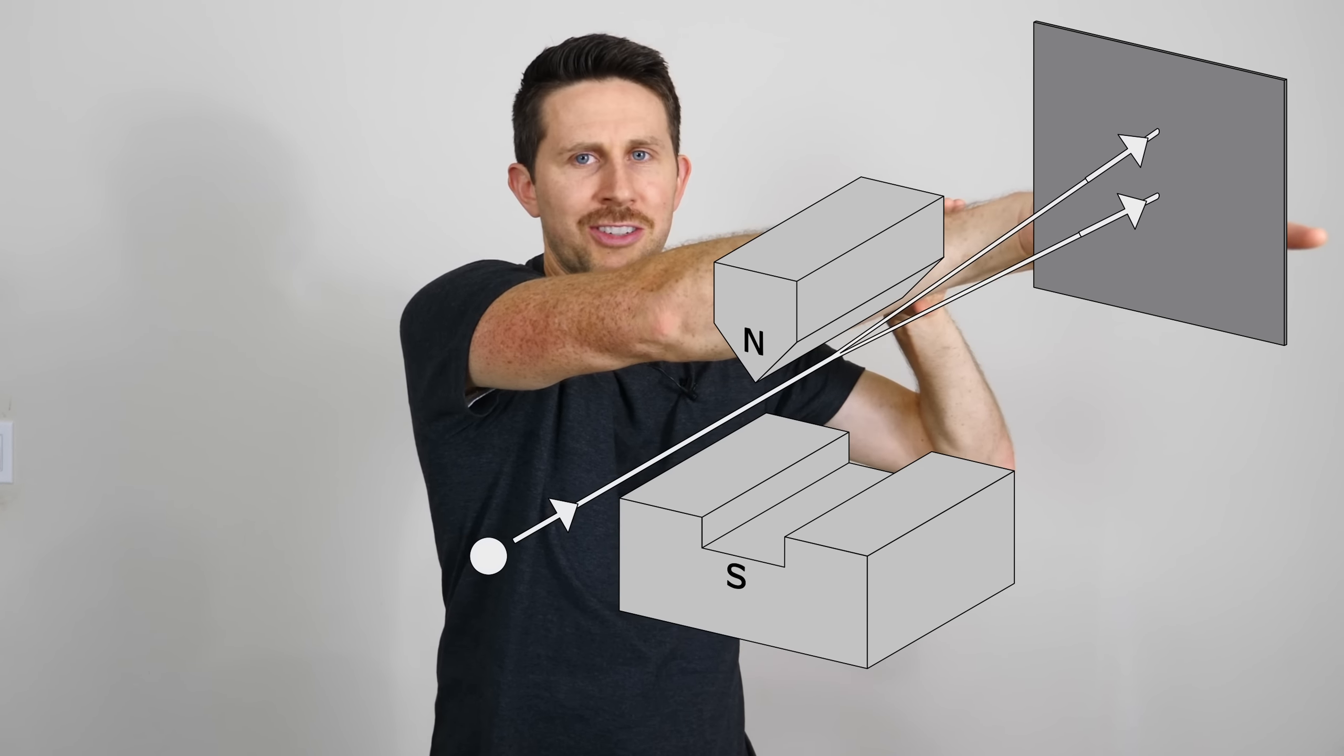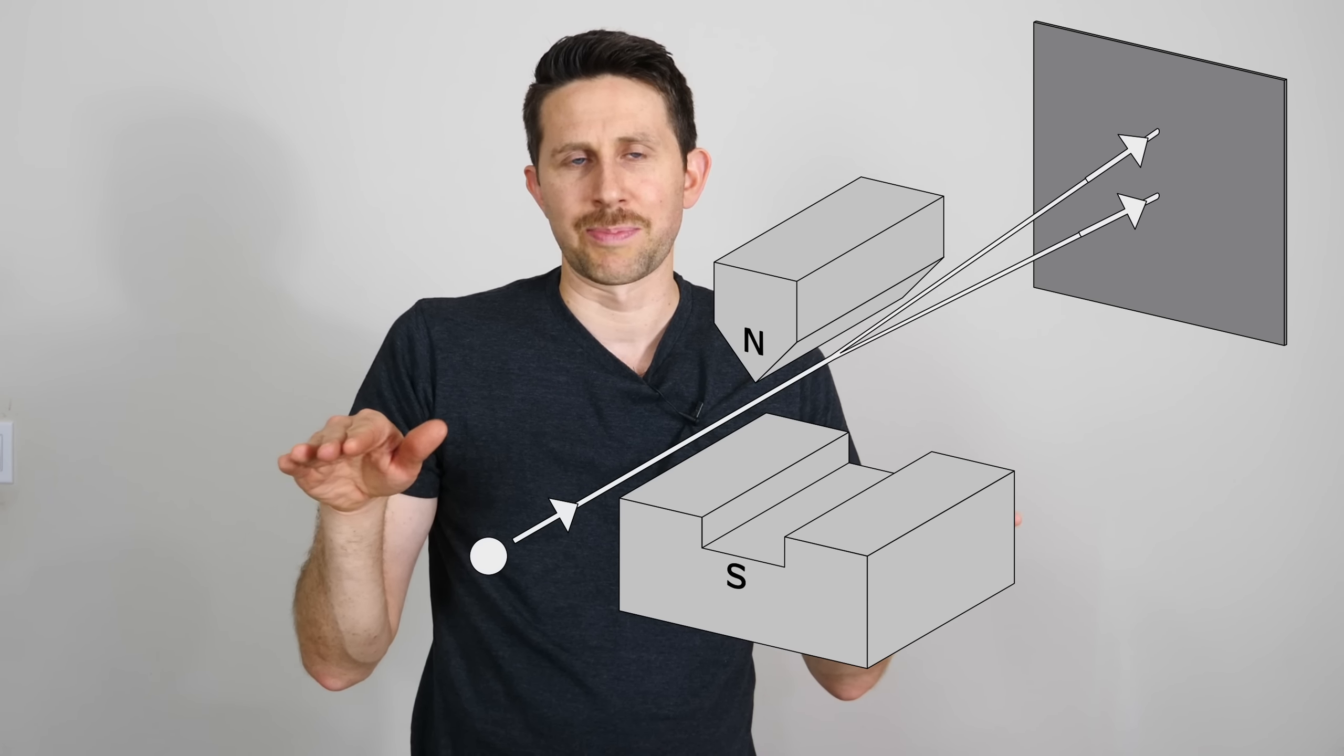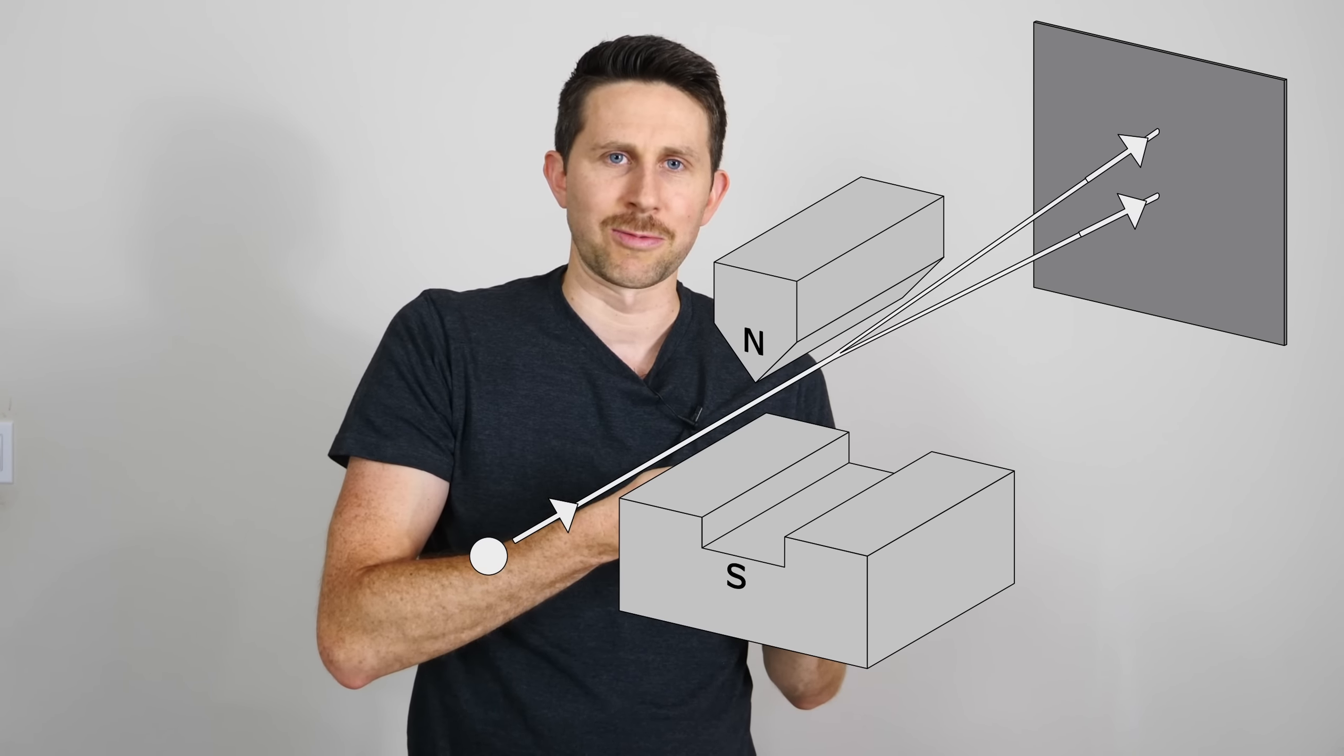It either goes this way when you shoot it through a magnetic field, or it goes the other way. And we found out there's no in-between values of this spin. It's either plus one half or minus one half, that's it. So when electrons are in the same orbital, one of those electrons always has to have a plus one half spin, and the other electron always has to have a minus one half spin.